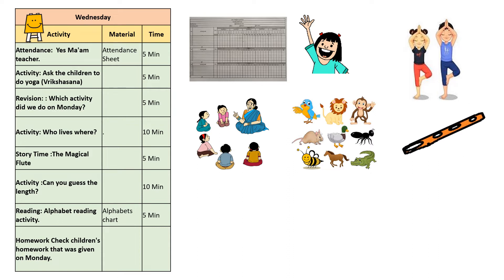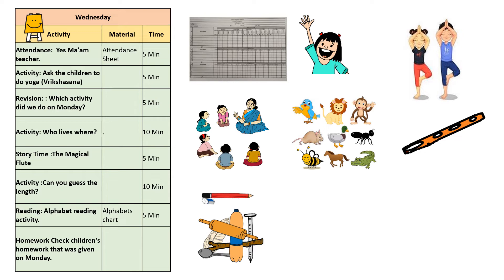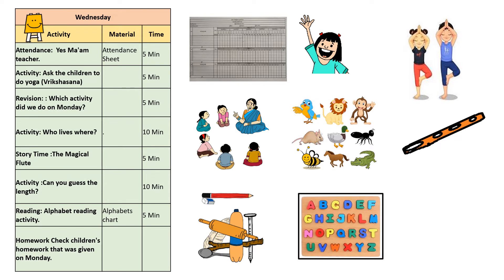Story time: narrate the story of the magical flute to the children. Can you guess the length? Show the children an eraser and a pencil and ask them to guess which object is longer. Check how many guessed correctly, and continue with different objects. Alphabet reading activity: ask children to read letters using the alphabet chart. Homework: check children's homework that was done on Monday.